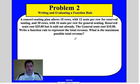Okay, so this is concert seating plan allows 10 rows with 12 seats per row for reserve seating and 30 rows with 16 seats per row for general seating. The reserve seats cost $25 but is already sold out. Okay, the general seats cost $10. Okay, so write a function rule to represent the total revenue.